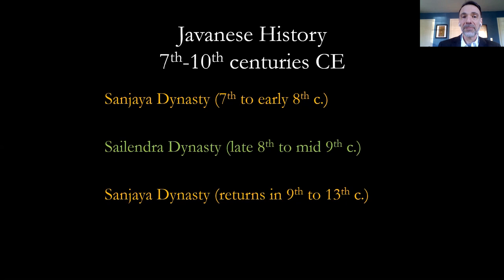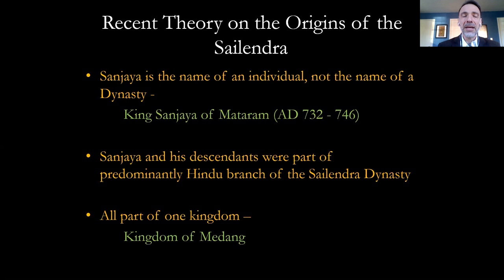There has been some recent rethinking of this sequence of events, particularly surrounding the word Sanjaya. The new theory says that Sanjaya is the name of an individual — King Sanjaya of Mataram — not the name of an entire dynasty. This name has appeared in a recently discovered inscription. If this is correct, Sanjaya and his descendants were part of the predominantly Hindu branch of the same Shailendra dynasty. In other words, they were all related — different portions of the same family line — and all these rulers were part of one kingdom: the kingdom of Mataram.